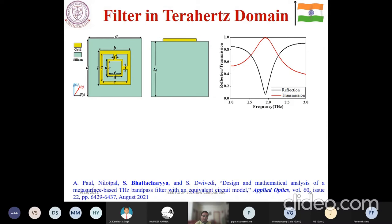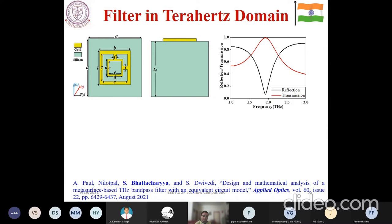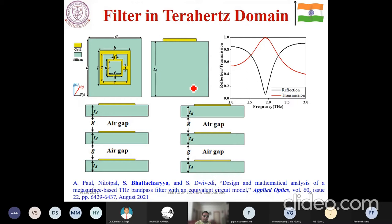I have another interesting application towards the filter. In the terahertz domain, this is basically the first-order filter. You make some kind of gold or metallic deposition on top of a silicon layer — both modeled using the Drude equation. You are having enhanced transmission, but in the cutoff region it is not very sharp. So the second-order and third-order filters have been developed. For a single layer you have an air gap; for a double layer you have a single air gap; and the triple layer has two air gaps for a third-order filter.